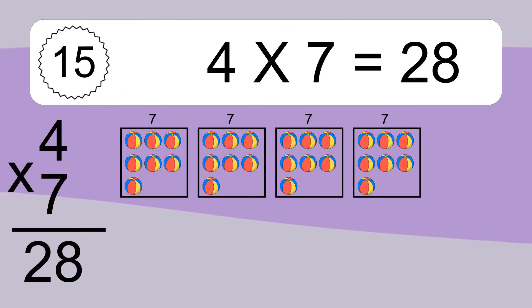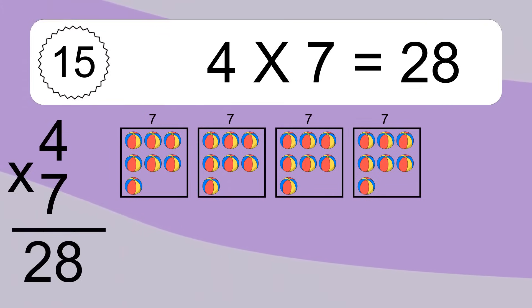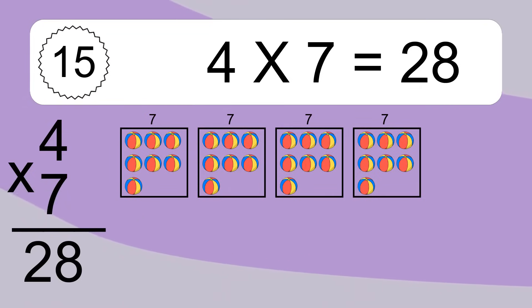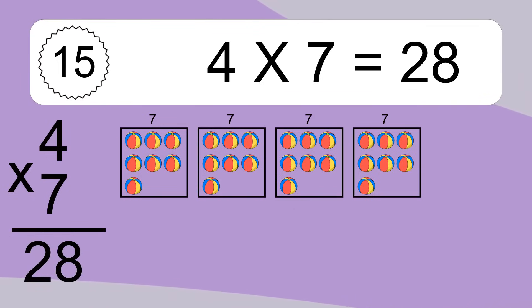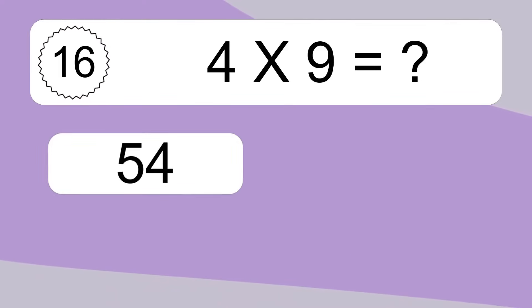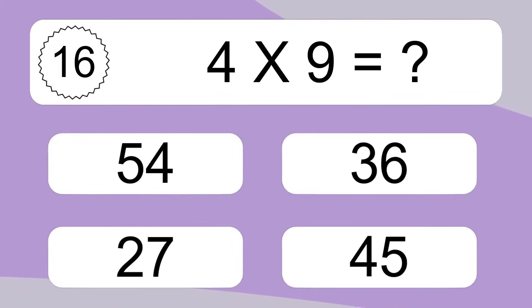4 times 7 equals what? We have 4 boxes and each box has 7 colorful balls inside. If you count all the balls in all the boxes together, you will have 4 times 7 balls. This equals 28 balls.